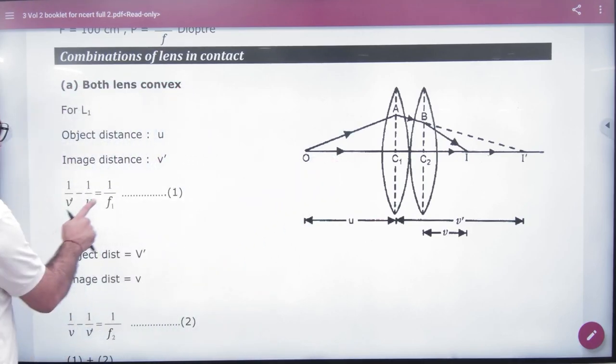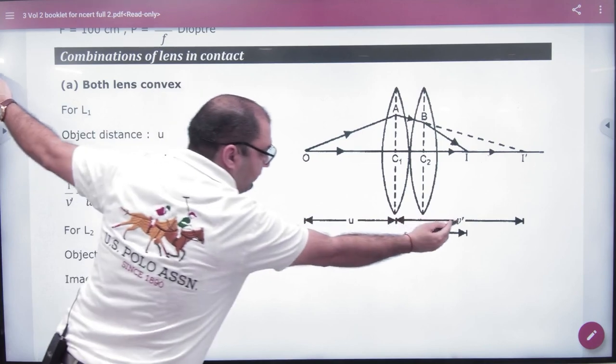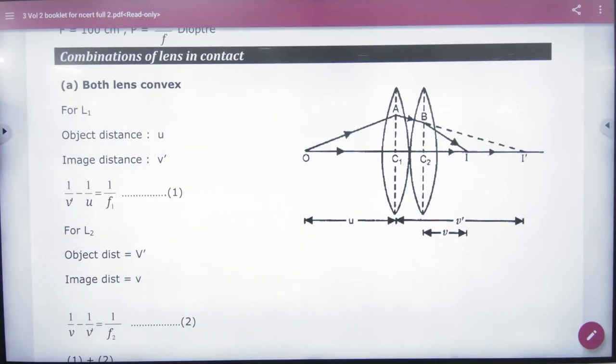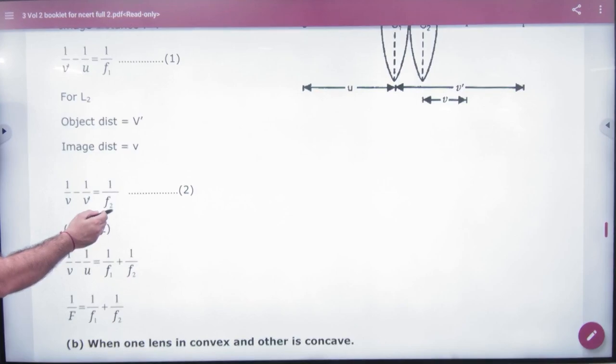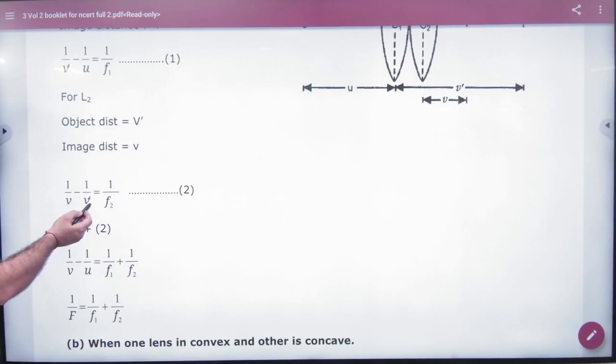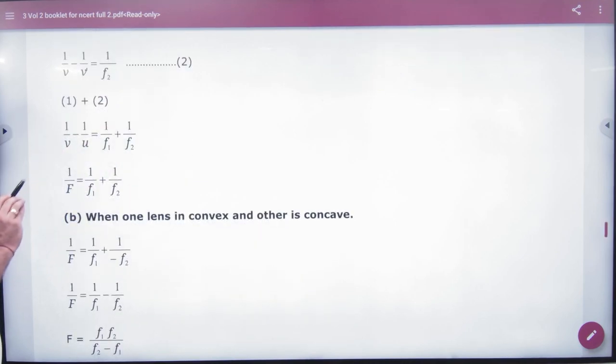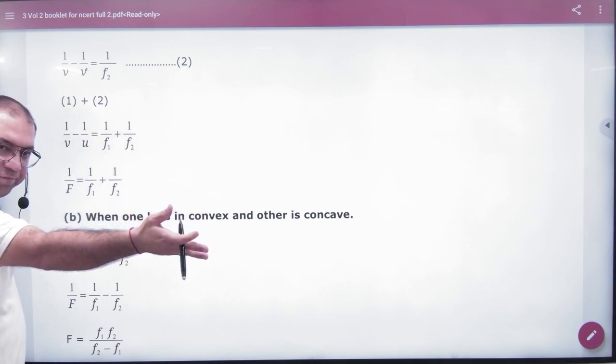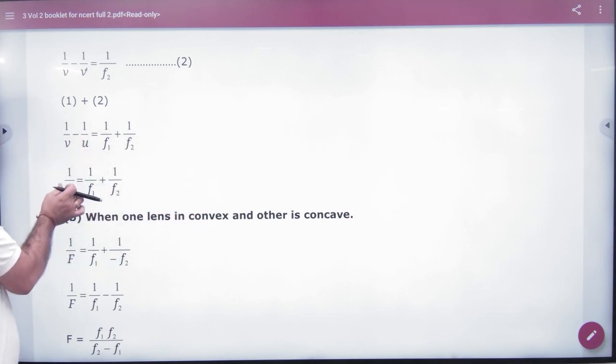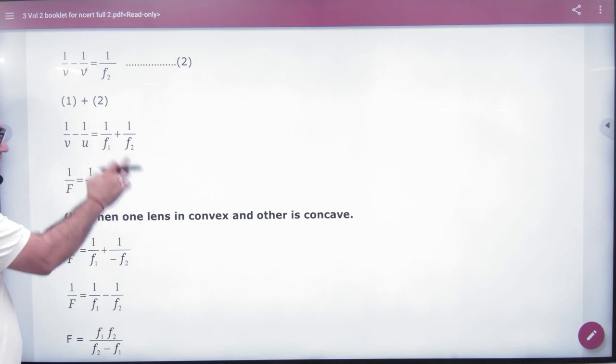So for the first lens, one by focal length is F1. One by V dash, image is V dash. What is U? Lens formula. Second lens is 1 by F2. Where is the image? V. Object is V dash. If we add them, 1 by V minus 1 by U. The two lenses in combination have object U and final image V. So the focal length of the combination is F. This is a very important formula: 1 by F equals 1 by F1 plus 1 by F2. Note this in the formula booklet.